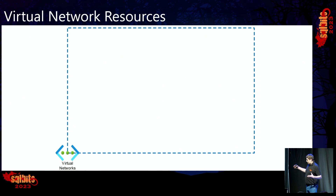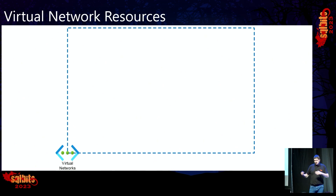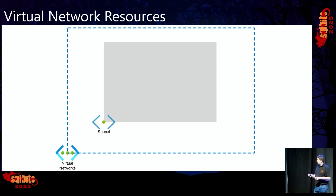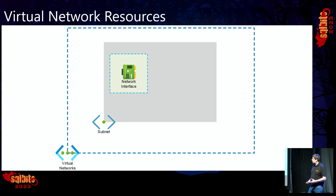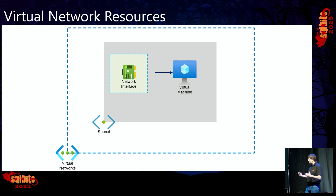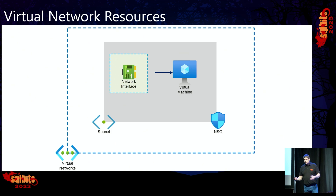In terms of architecture diagrams, if you look at the Azure Architecture Center, this is the kind of thing you would expect to see. A virtual network has to contain at least one subnet, a subnet would have network interface cards, and they can be connected to virtual machines. We can protect that subnet or network interface card with something called an NSG — a network security group.